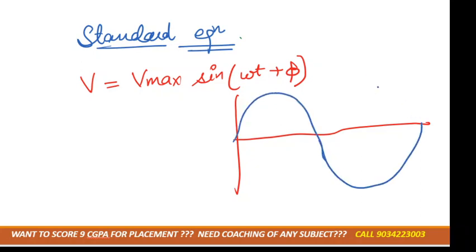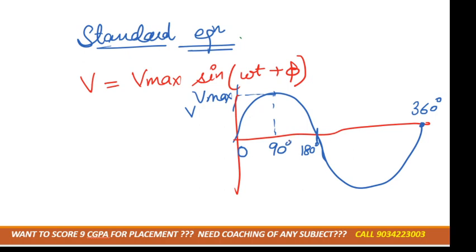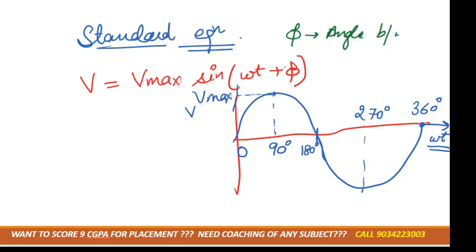Sinusoidal means it has a sine waveform. This is v here, and the maximum goes up to v-max. It varies from zero, starts from zero, changes its cycle to 180 degrees, and completes its cycle at 360 degrees. It goes maximum at 90 degrees and goes maximum in the negative side at 270 degrees. We denote the x-axis by omega-t.